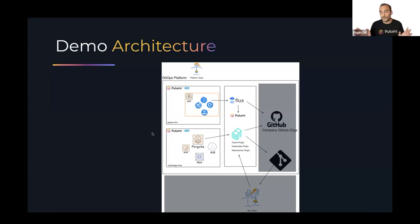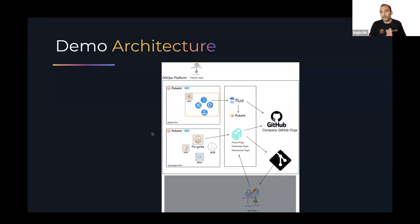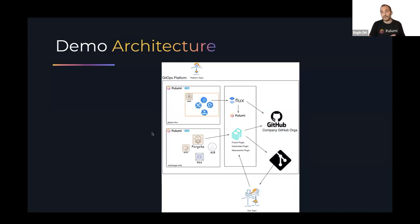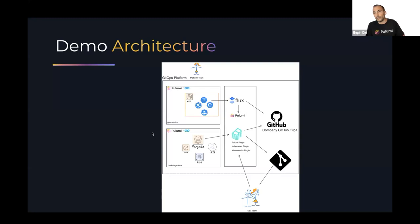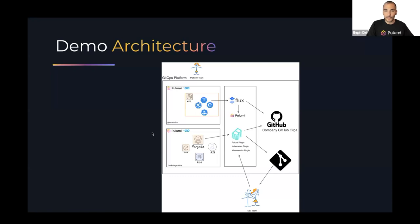We also install the Pulumi plugin, Kubernetes plugin, and Weaveworks Flux plugin into Backstage. Everything points to a GitHub organization, wired up with a GitHub App so Backstage can create pull requests, create repositories, and do everything needed. The development team then communicates through Backstage as a unified interface for all permitted provisioning and visibility operations.